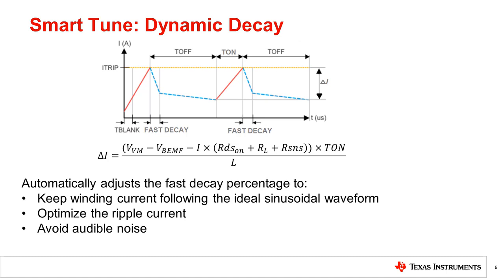If the motor current overshoots the target trip level, the decay mode becomes more aggressive and a higher percentage of fast decay is applied on the next cycle to prevent regulation loss. If a long drive time must occur to reach the target trip level, the decay mode becomes less aggressive on the next cycle to operate with less ripple and more efficiently. SmartTune dynamic decay is optimal for applications that require minimal current ripple but want to maintain a fixed frequency in the current regulation scheme.